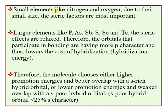For larger elements like phosphorus, arsenic, antimony, sulfur, selenium, and tellurium, the steric effect is relaxed and the crowding problem is reduced. Therefore, the orbitals that participate in bonding have more p character, which reduces the hybridization energy cost.